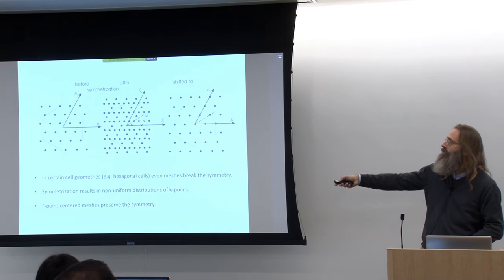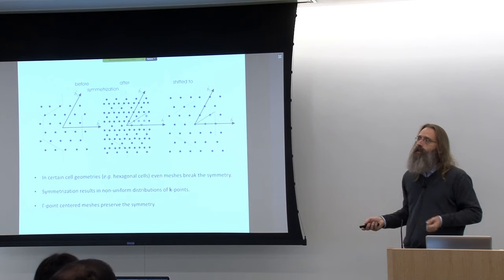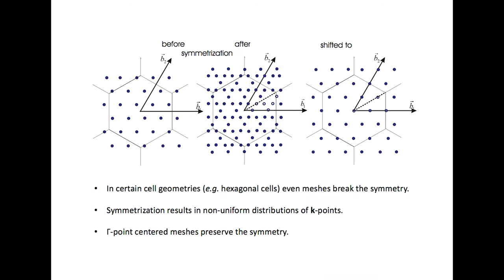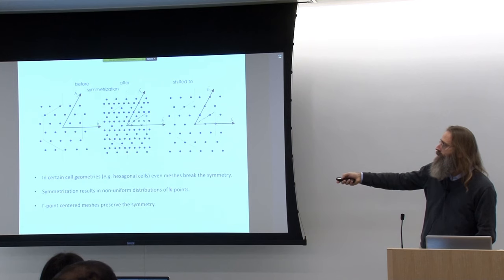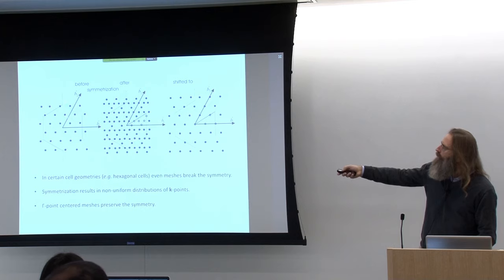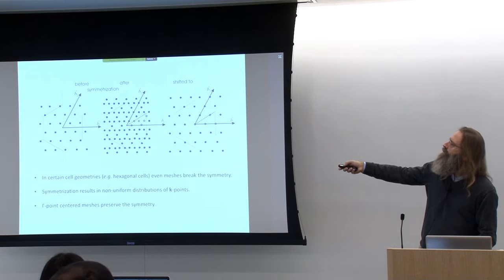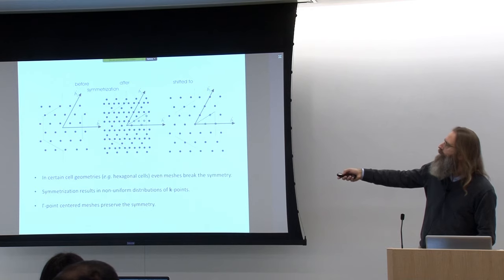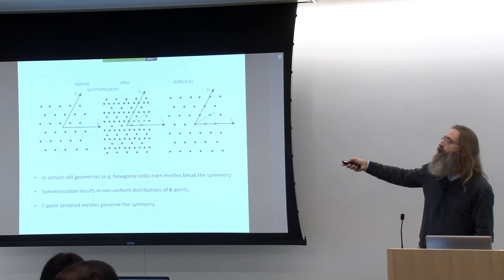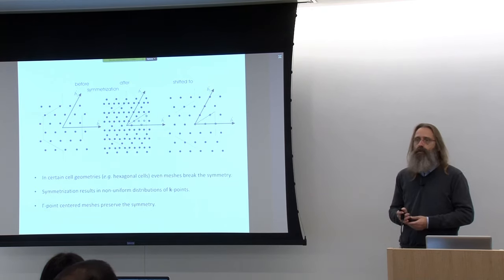We can always take this lattice — a regular mesh — and shift it to gamma, and then symmetry will be conserved. For an FCC or hexagonal lattice, you can take a regular mesh and shift it towards gamma to avoid the symmetry-breaking problem.